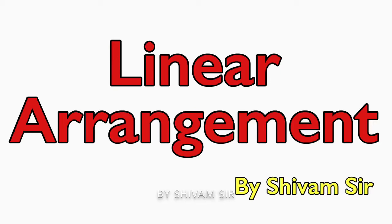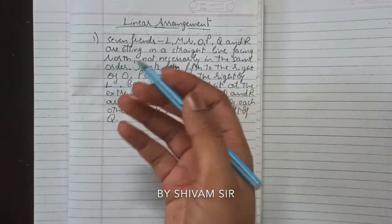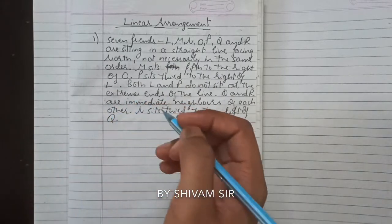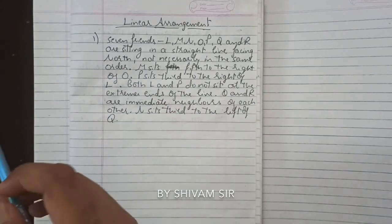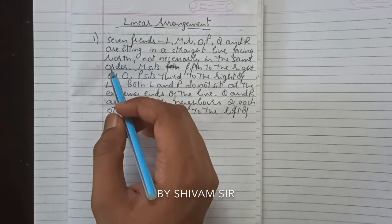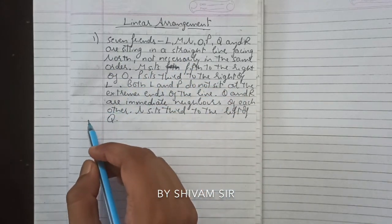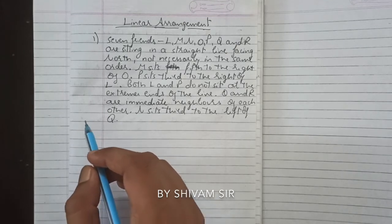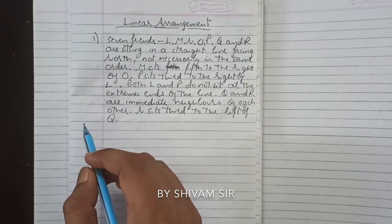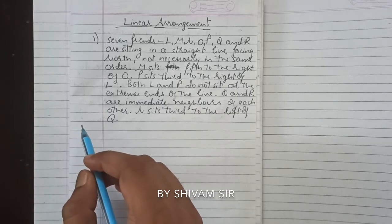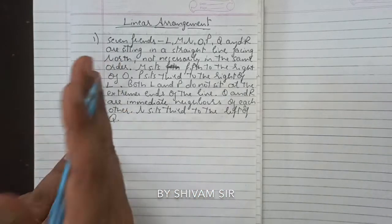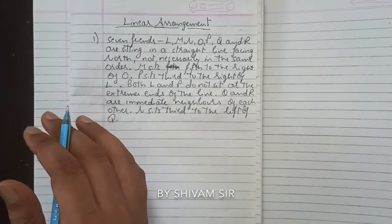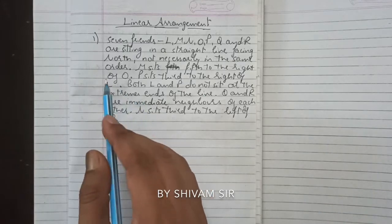The next topic is linear arrangement, which is very easy — similar to circular arrangement and seating arrangement we did earlier. We will be solving linear arrangement now. Let's discuss this topic with the help of a question. Seven friends L, M, N, O, P, Q, R are sitting in a straight line facing north. You have to arrange them seated in that direction.